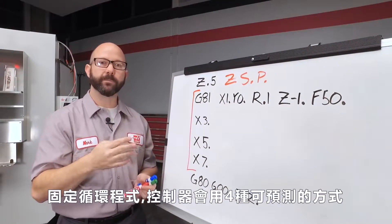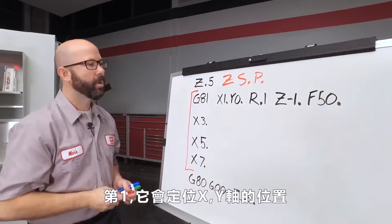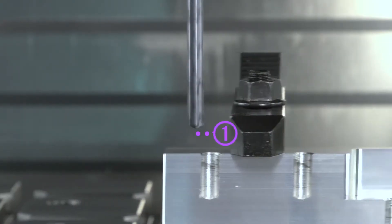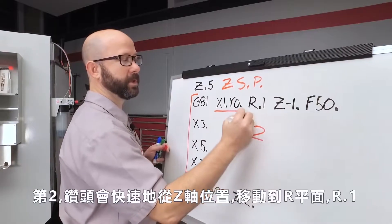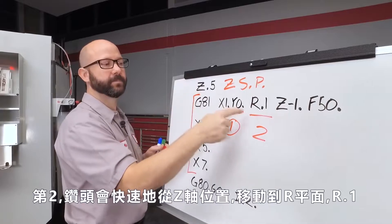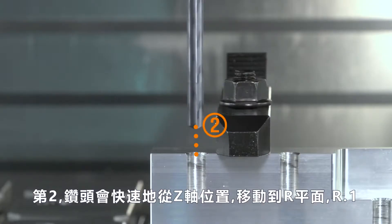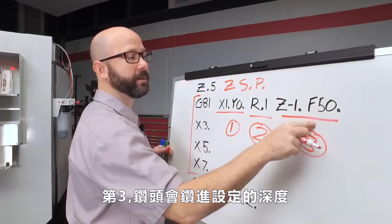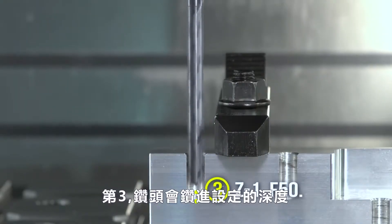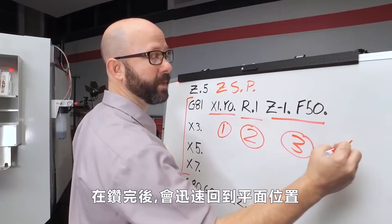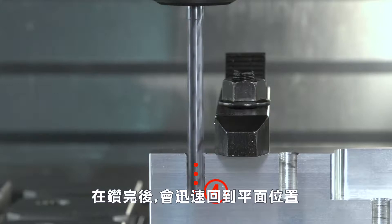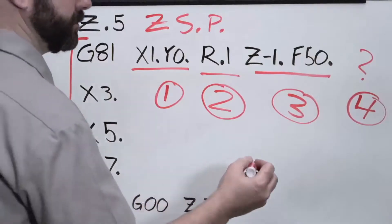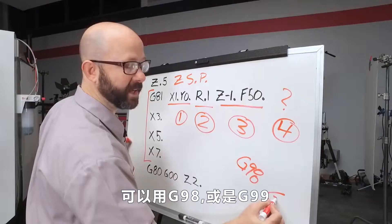With our CAN cycles, the control is going to move in four very predictable ways. One: it's going to position our XY location. Two: the tool is going to rapid from the Z value where it was to our R plane — R.1. Three: our tool is going to feed to our Z depth. And after it's drilled the hole, it's going to retract back up to our clearance plane. We have two options: we can either use a G98 or a G99.